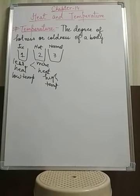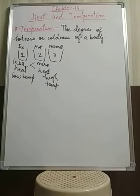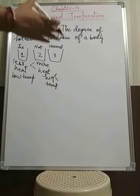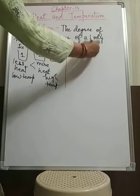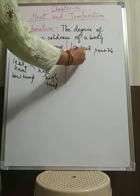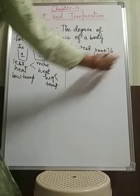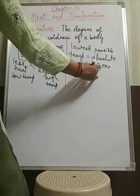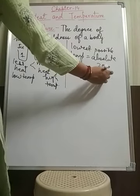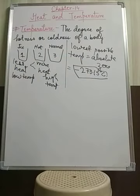The temperature inside the hottest star is many millions of degrees — the temperature of that hottest star is many million degrees, meaning it is extremely hot. The lowest possible temperature is called absolute zero, and the highest temperature is that of the hottest star, which is in the millions of degrees.